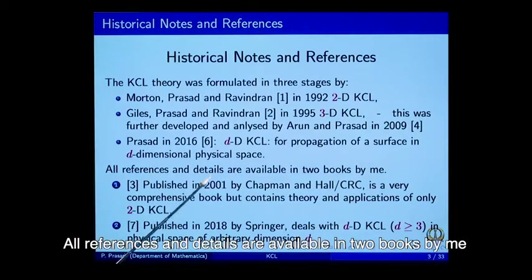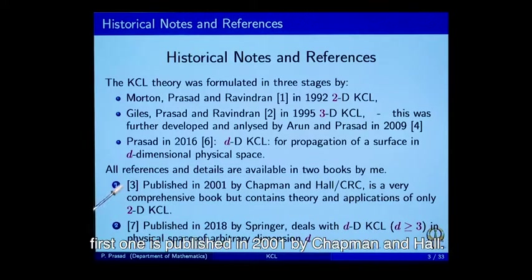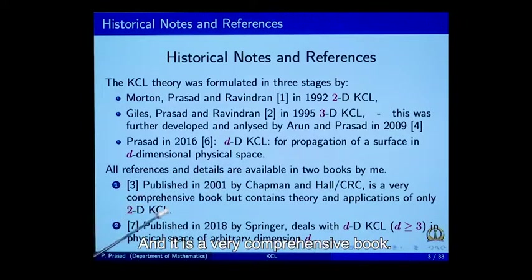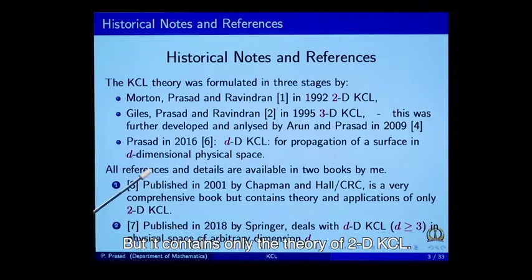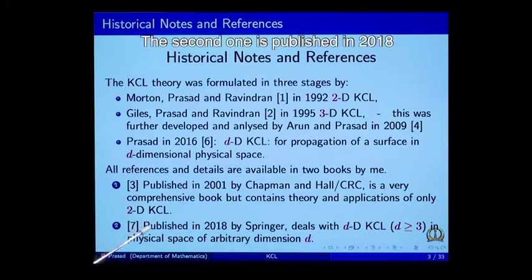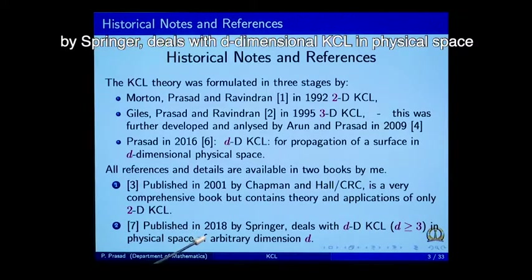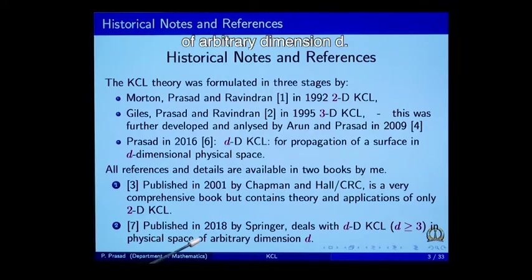All references and details are available in two books by me. The first one is published in 2001 by Chapman and Hall — a very comprehensive book, but it contains only the theory of 2-D KCL. The second one is published in 2018 by Springer and deals with D-dimensional KCL in physical space of arbitrary dimension D.